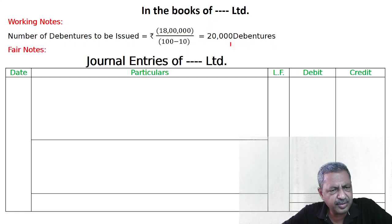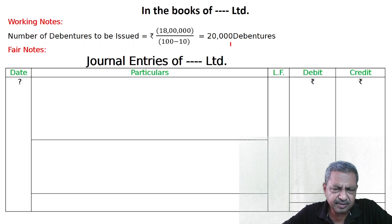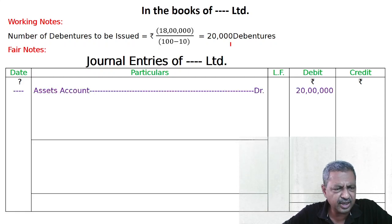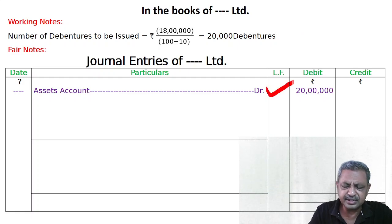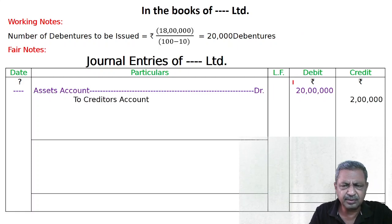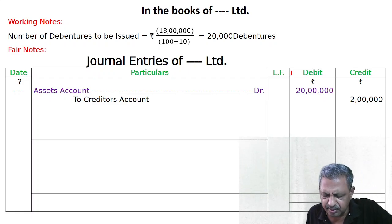So in the first note, we will make a journal entry. Assets account debited — Rs. 20 lakhs. To liabilities, to creditors.